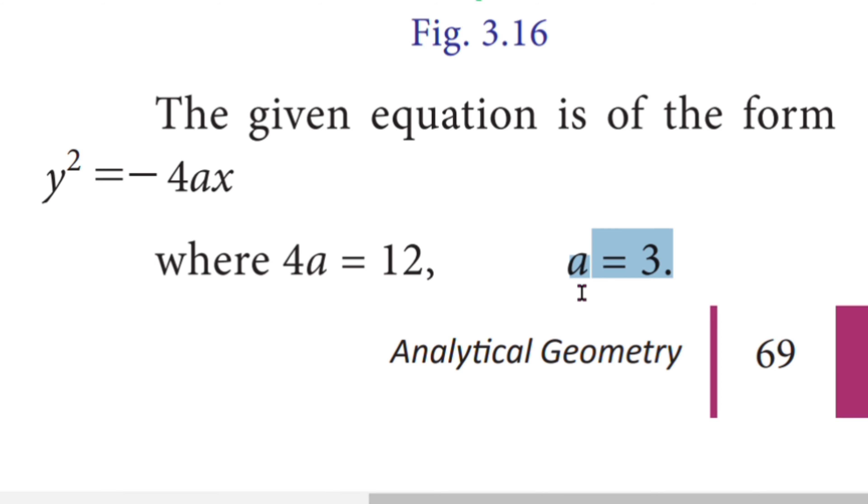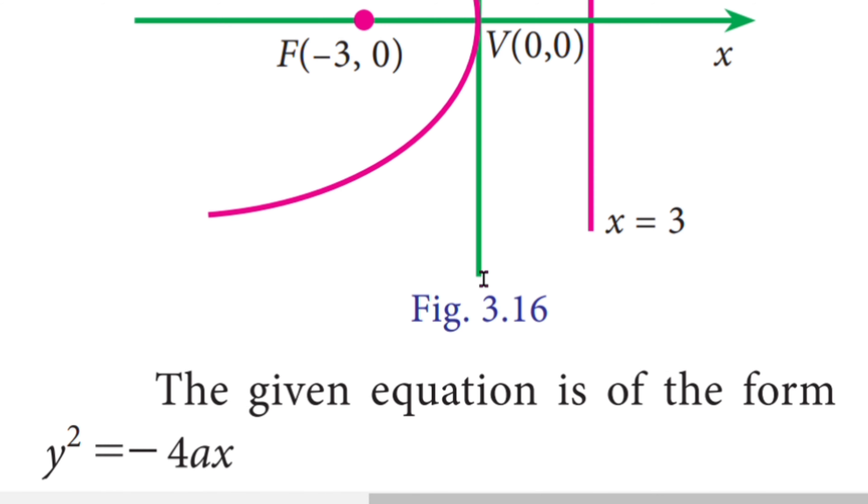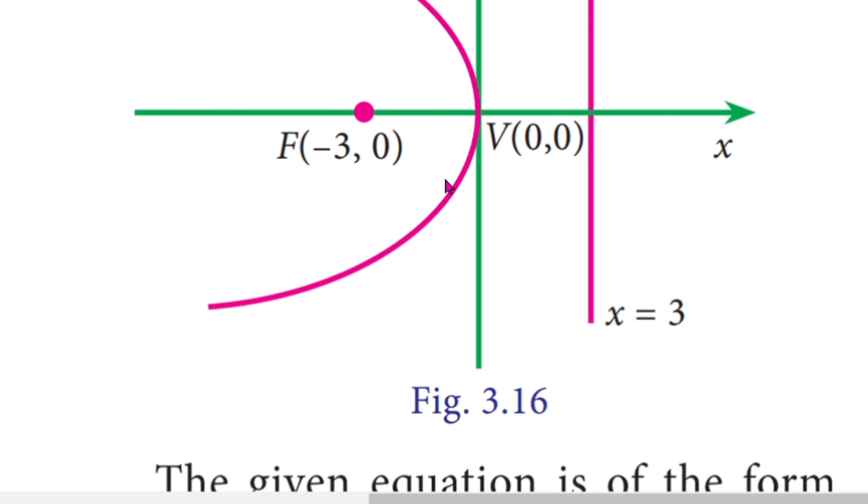Solving for a gives a = 3. The focus is at distance a, which is 3 units from the vertex.